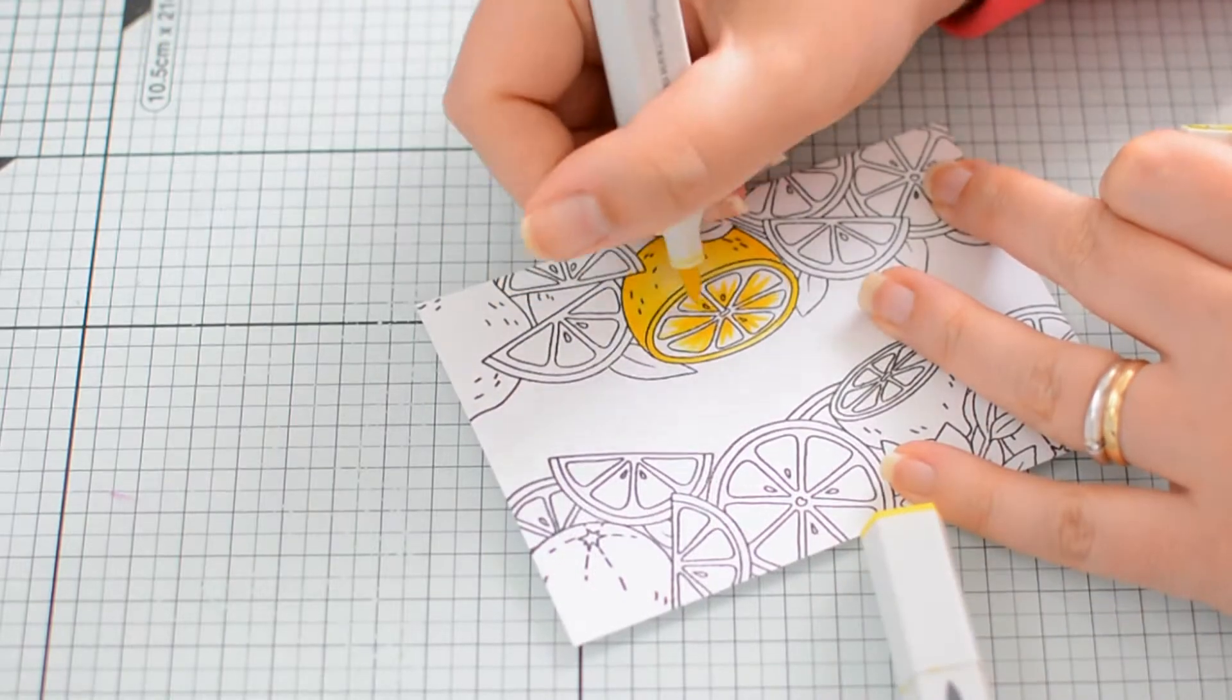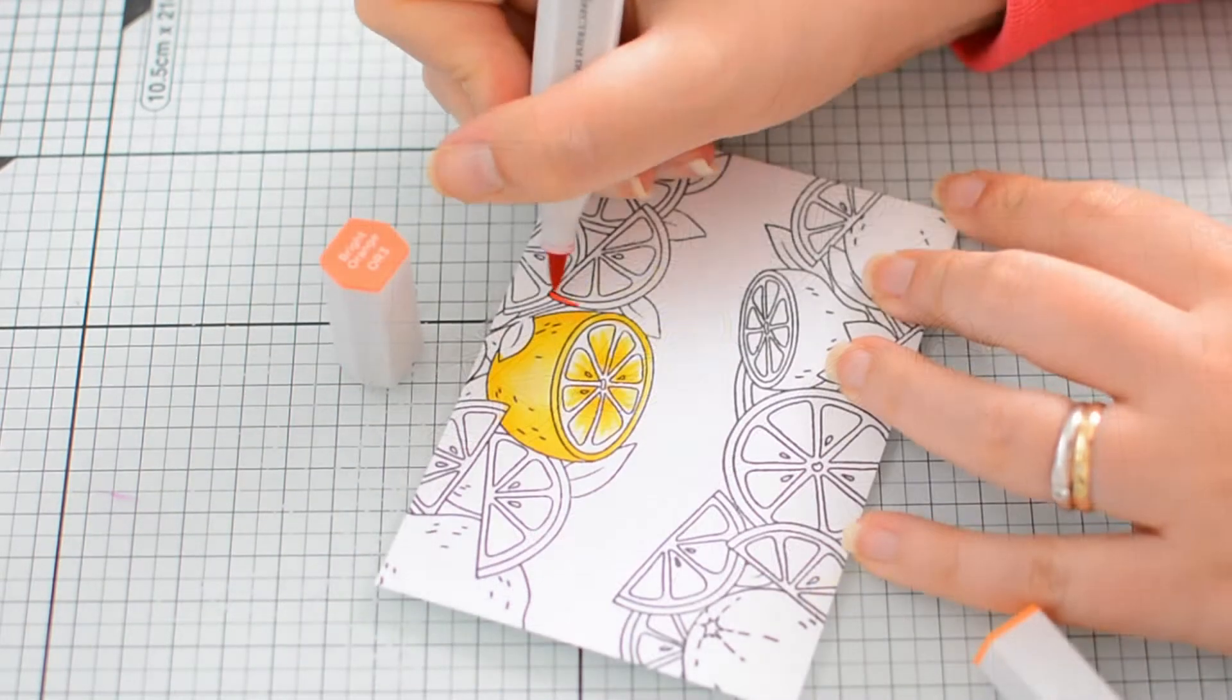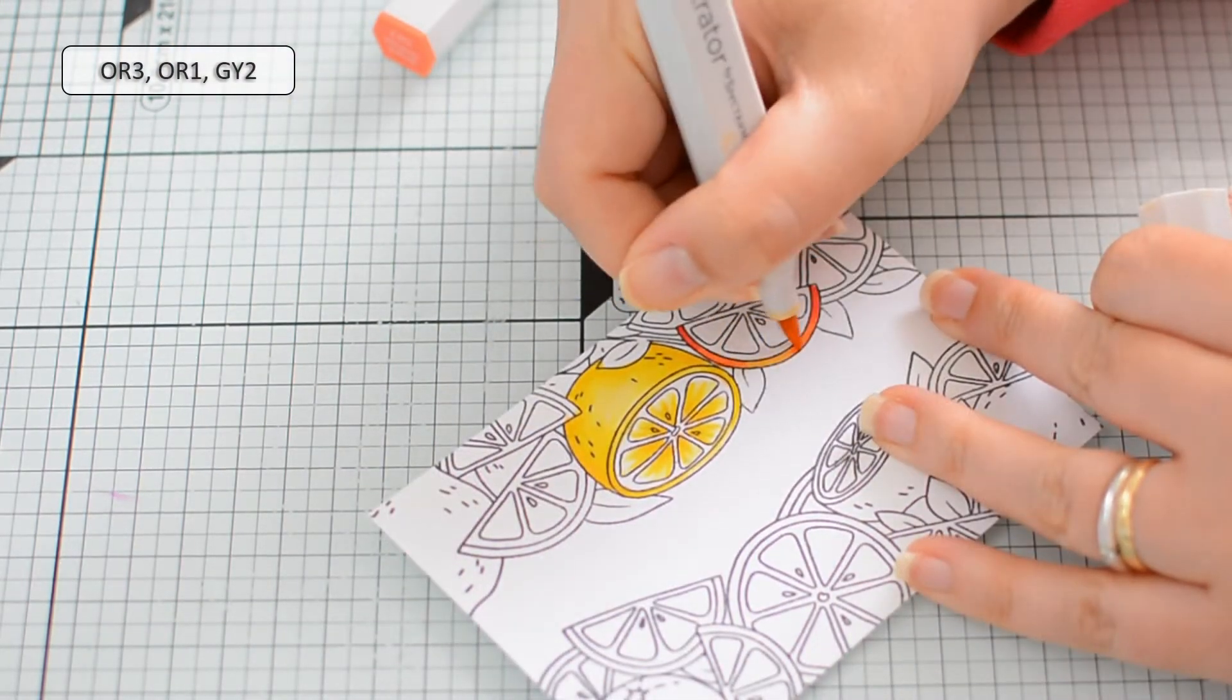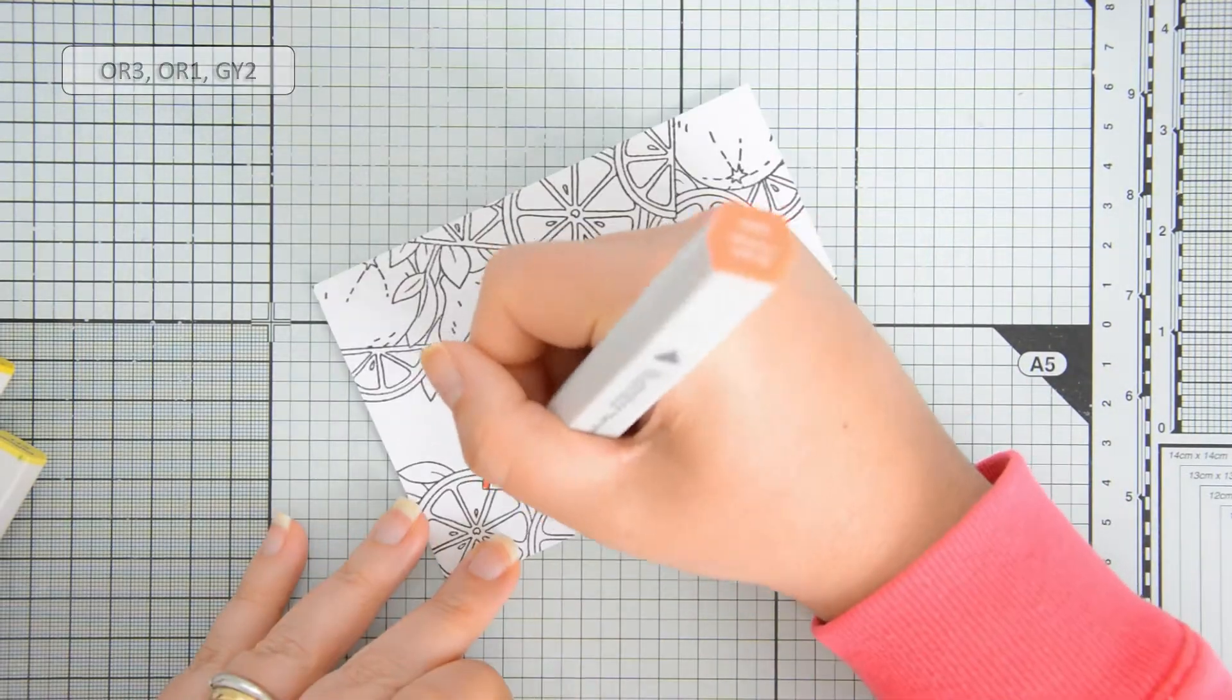I am blending the colors on the peel in kind of a smooth way, whereas for the wedges, so for the inside portions of all these citruses, I'm using some brush strokes.